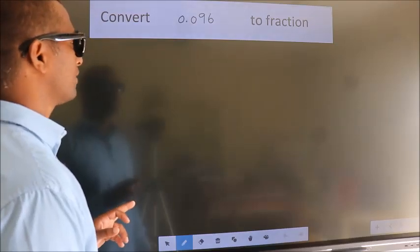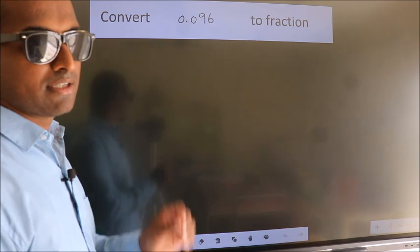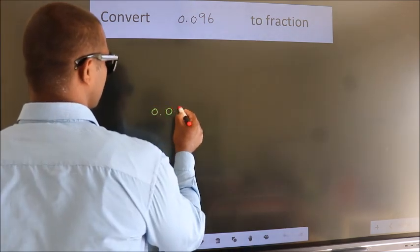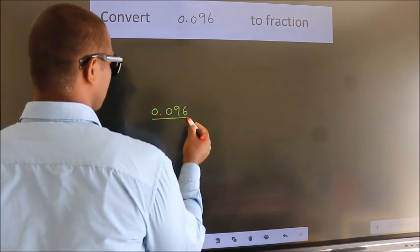Convert 0.096 to fraction. How do we convert this? Given is 0.096. We now take it as 0.096 by 1.